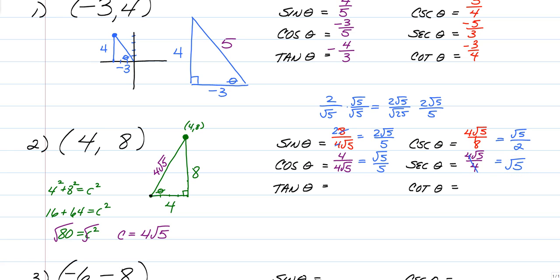Tangent is opposite over adjacent. Working with opposite over adjacent, we're just going to have 8 over 4. And 4 over 8 — you must simplify. So 8 over 4 is 2, and 4 eighths is 1 half. That one was a little difficult because of the radical. In this unit, a lot of times you're going to have to give exact answers, so make sure you remember how to work with radicals. It's extremely important.